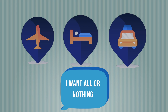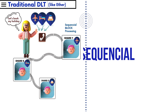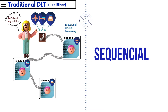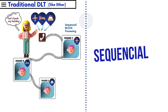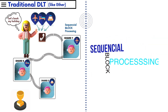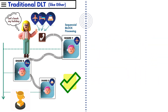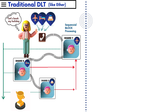I don't want to have a hotel but no flight to reach my holiday location. Other DLTs deal with this case in a sequential or block processing where all the transactions complete one block after the other. This is all happening just fine until one of the processes or requests fails.